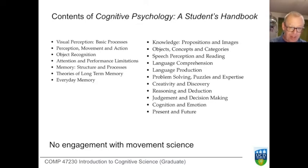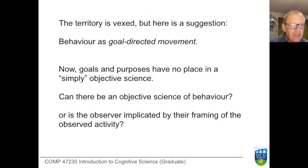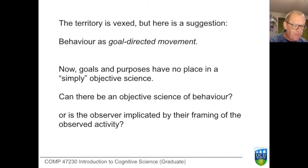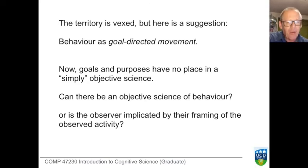There is a field of movement science, called various things. There is a great deal of expertise in physiology, sports science, and ethology for understanding movement. But the difficult relationship between movement and behaviour makes it hard for psychology to address movement without beginning with an intentional construction of that movement.